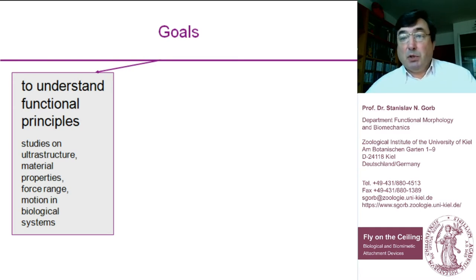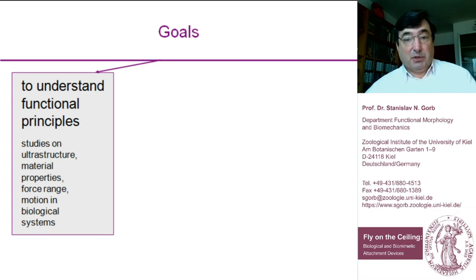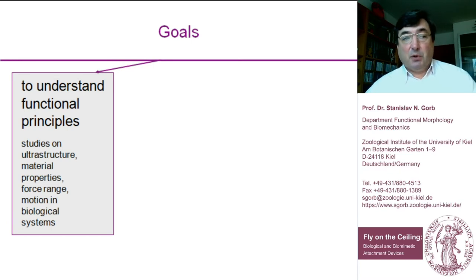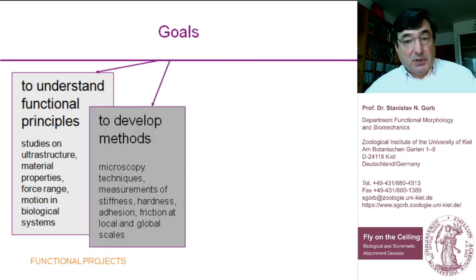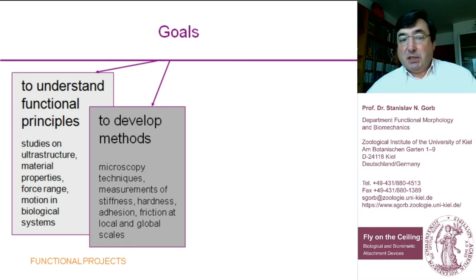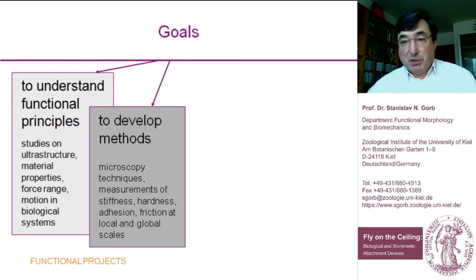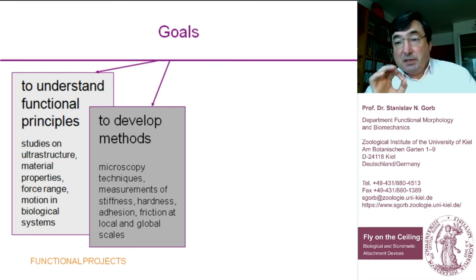Our goal is to understand functional principles, because if you want to mimic something for technology you have to understand well how it works in biology. For this purpose we study ultrastructure, measure material properties, and analyze force, ranging and motion in biological systems. We also participate in developing methods like microscopy techniques to measure stiffness, hardness, adhesion and friction at both local and global scales — from the level of the entire animal down to the micro- and nanometer scale.